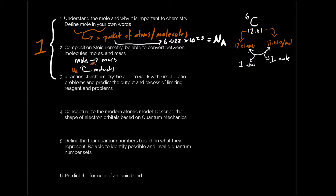Don't forget the role of molar mass — molar mass is grams per mole and is really important for identifying a species on the periodic table. It helps you identify what an element is because you can refer to the periodic table. For example, if you do a conversion and find a molar mass of 12.01 g/mol, you can determine that it is carbon.